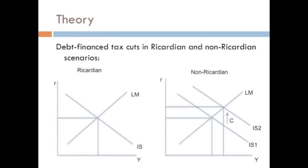So we can see this theory visually in these two IS-LM diagrams. On the left, we have a Ricardian world, and we can see that when the government cuts taxes by issuing debt, the IS curve stays where it is because there's no increase in consumption. On the right, in the non-Ricardian world, consumption increases when taxes are cut, shifting the IS curve up and increasing output.